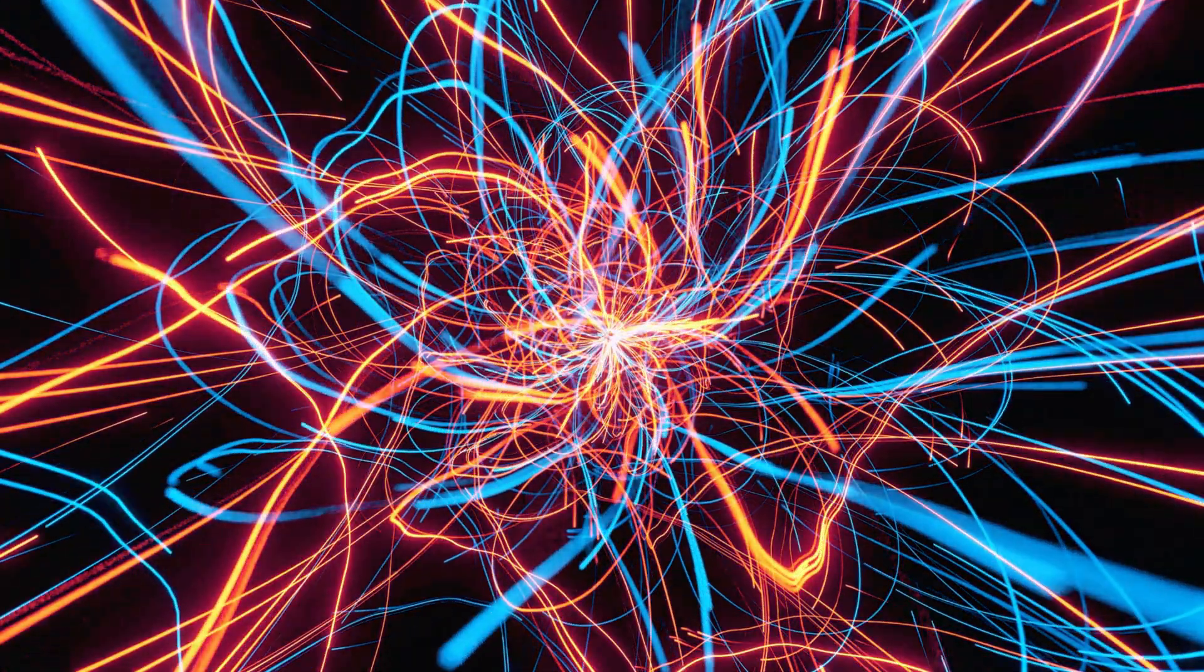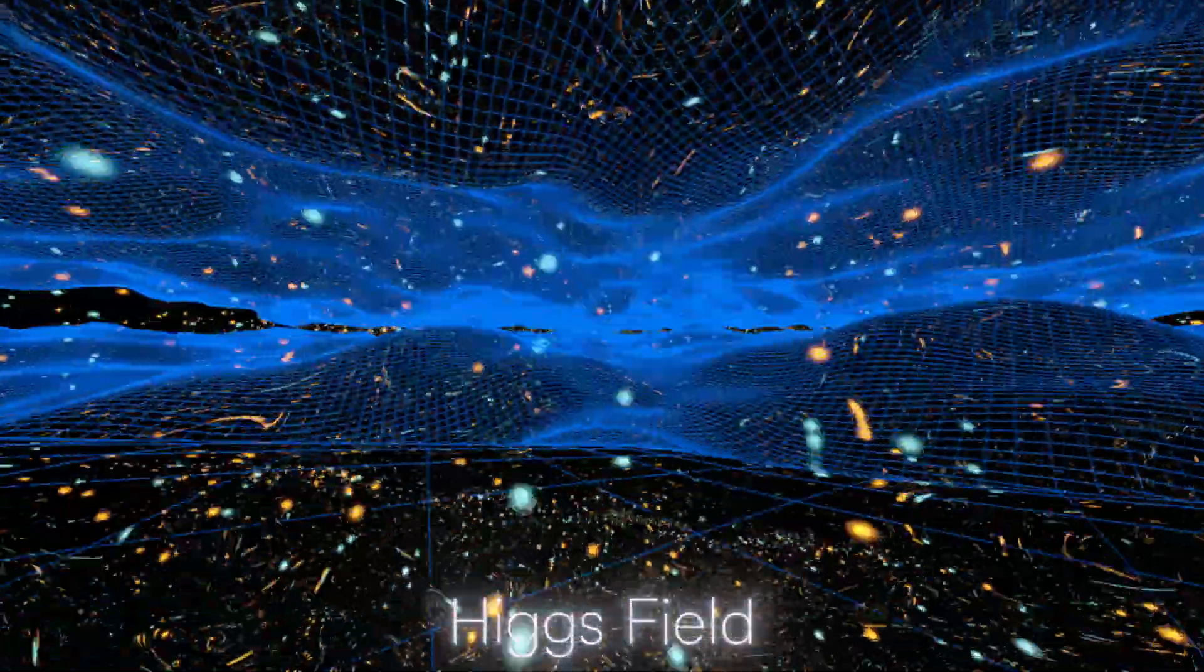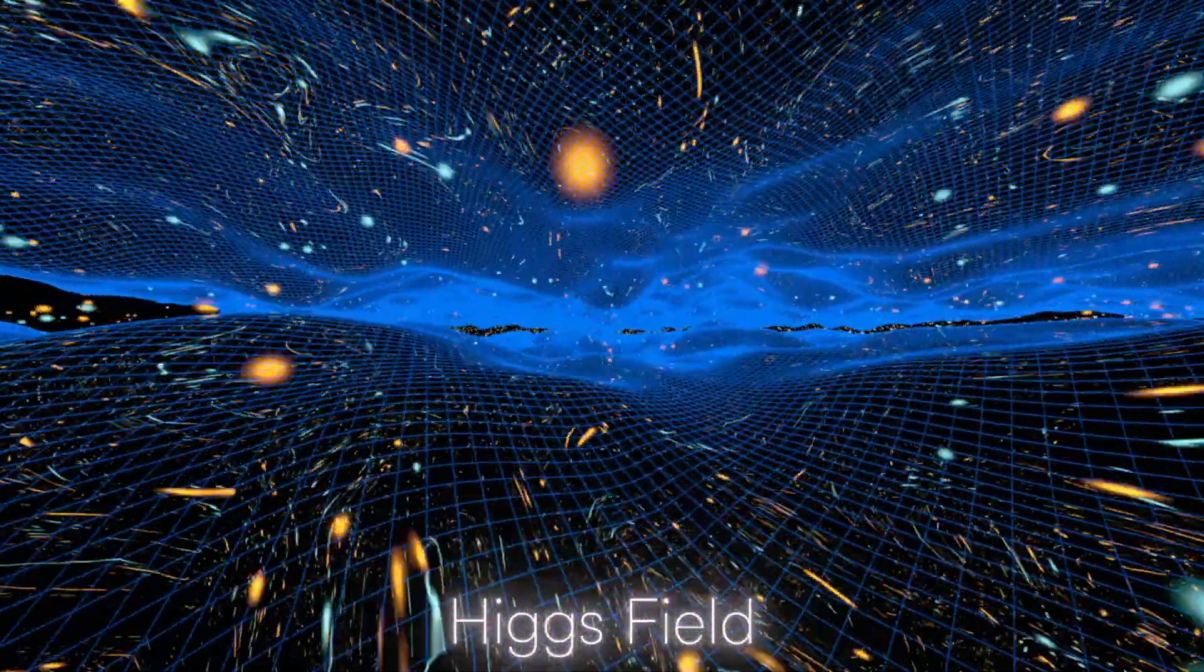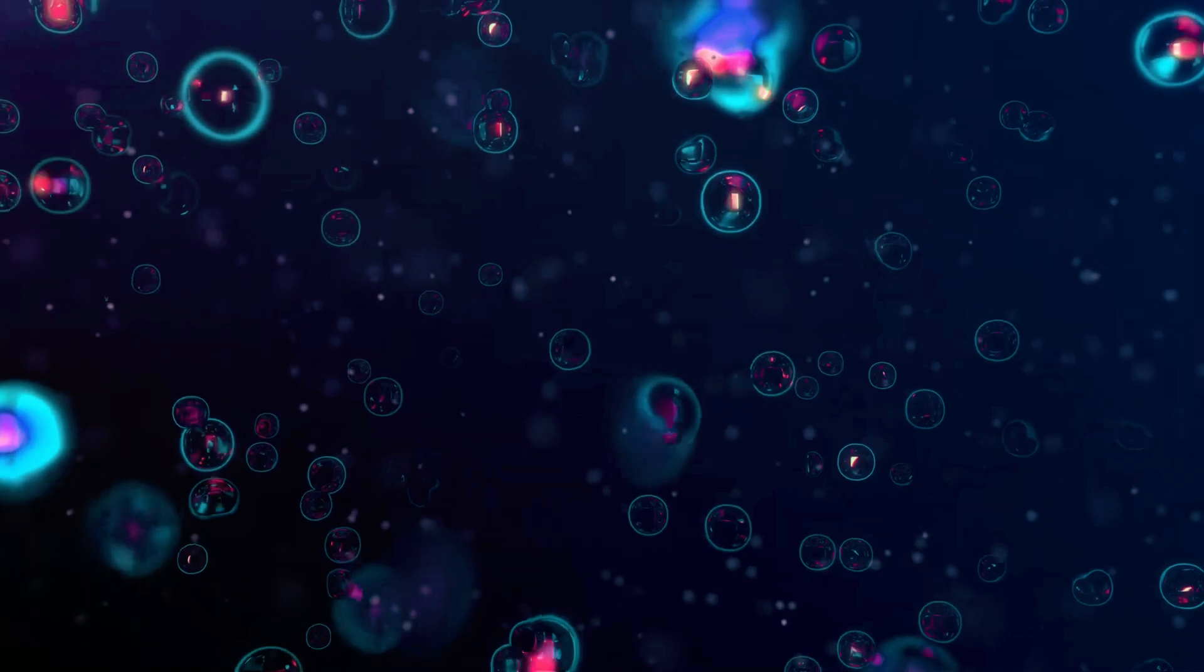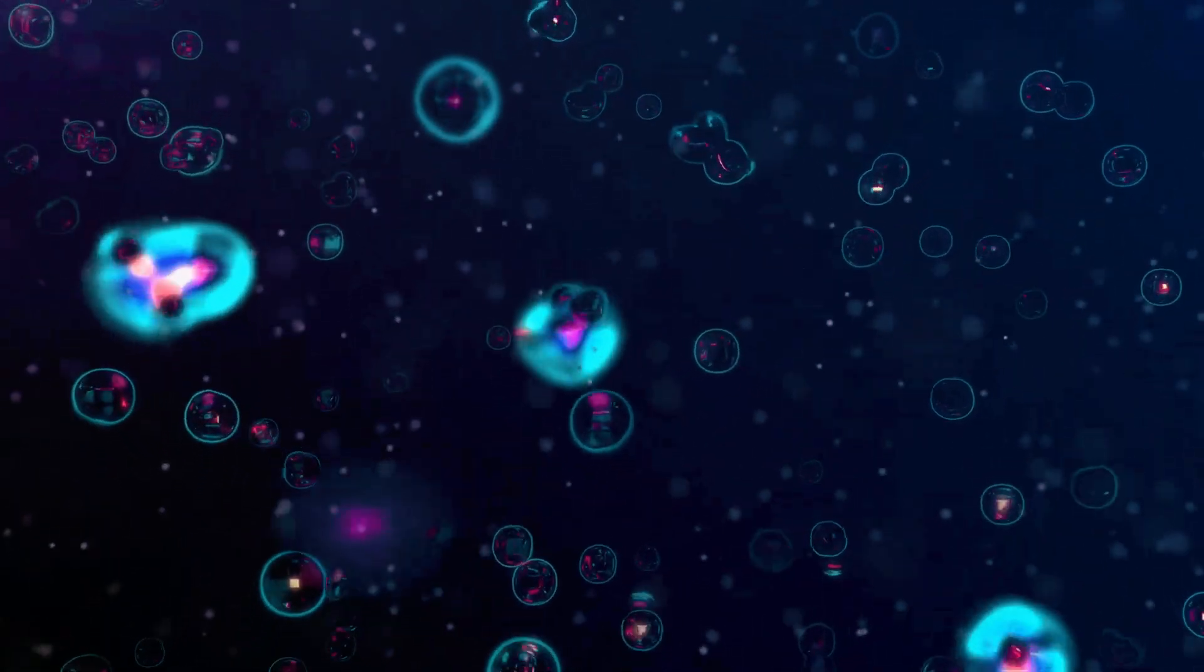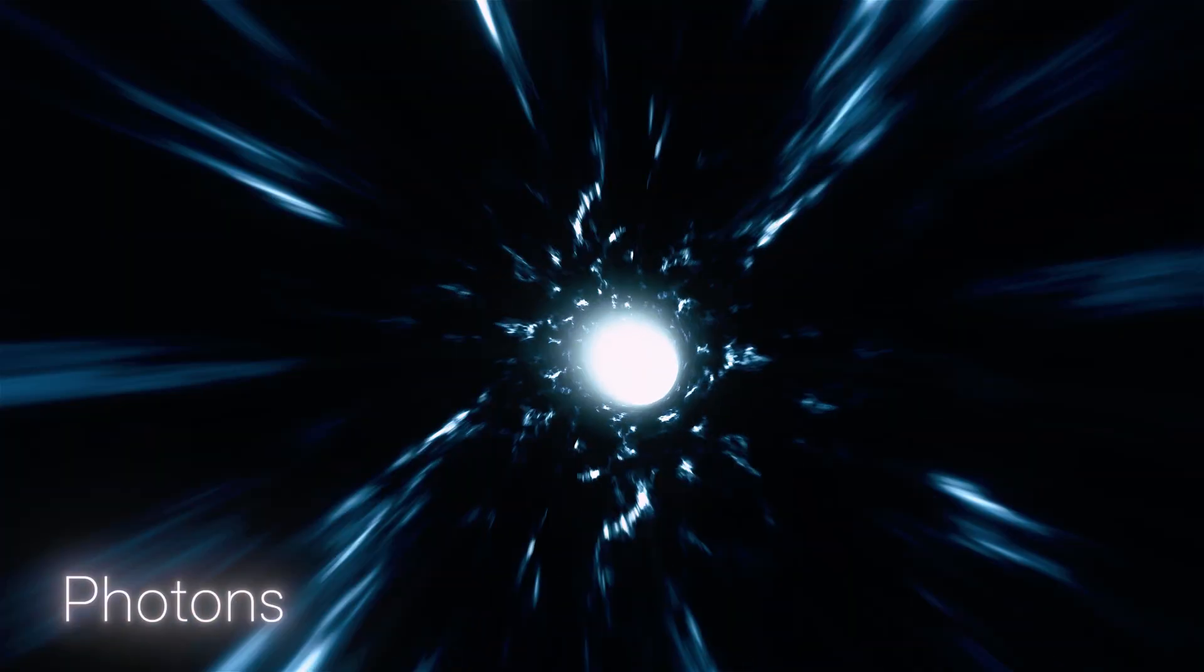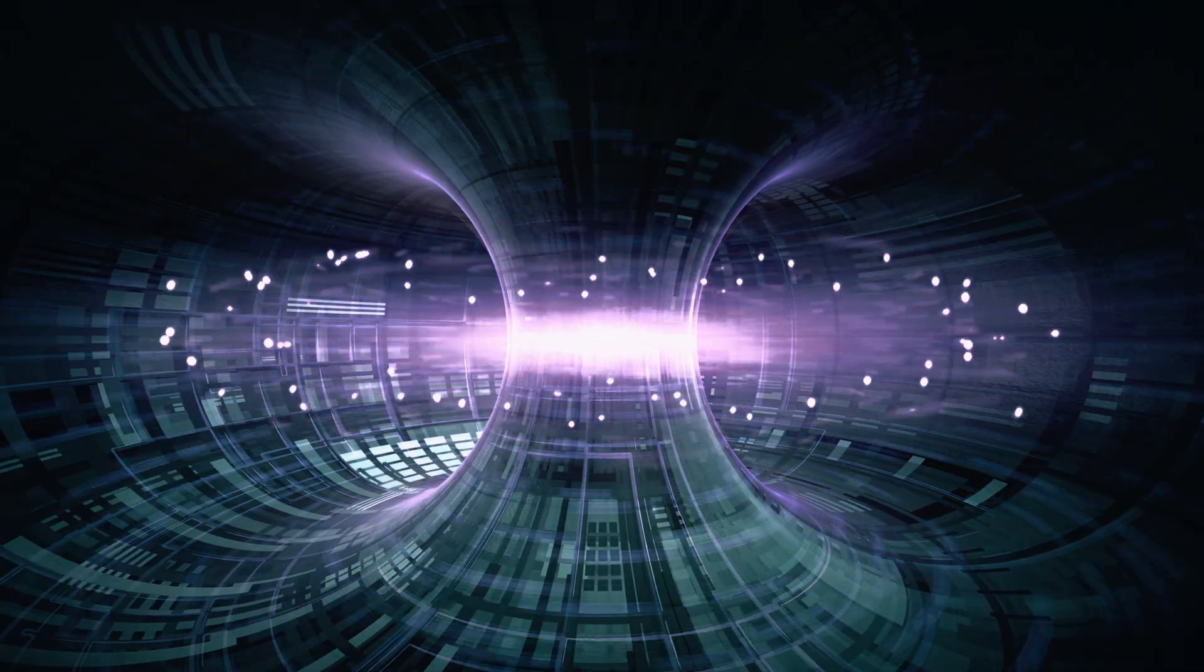In particle physics, the Higgs boson is like the signal that proves the existence of the Higgs field, which is present everywhere in the universe. Imagine the Higgs field as a water bath that all particles must swim through, and their interactions with it determine their mass. Some particles glide through the Higgs field effortlessly, like a fish darting through water. These are particles like photons, which make up light, and because they don't interact with the field, they remain massless and travel at the speed of light.